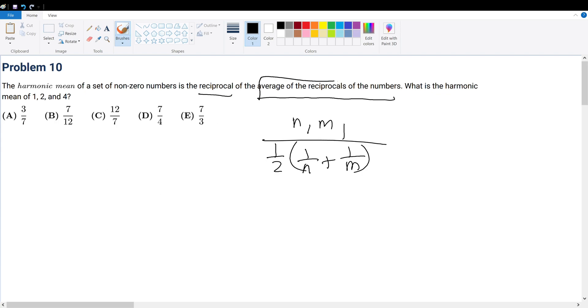The reciprocal of the average of the reciprocals of the numbers. So how do you find the average of the reciprocals of 1, 2, and 4? Well, 1 plus 1 over 2 plus 1 over 4 is the sum, but then we've got to take the average of these, so it times 1 over 3.